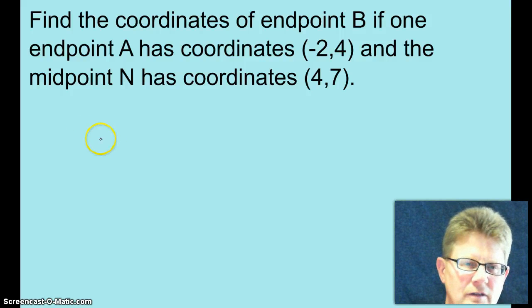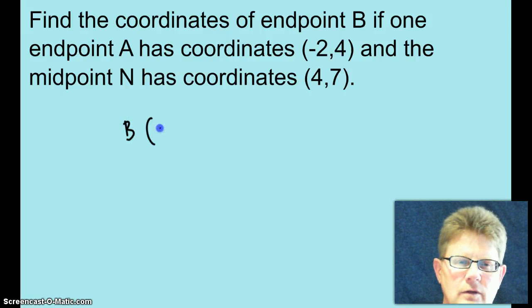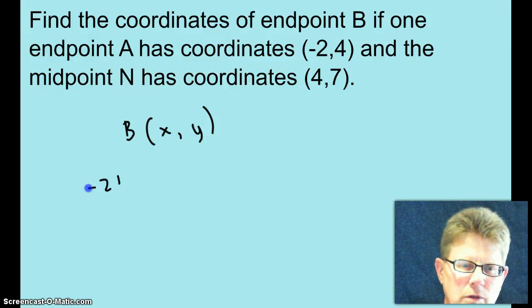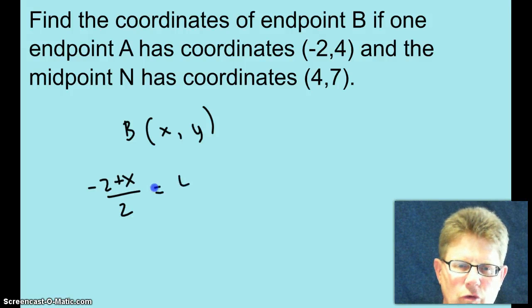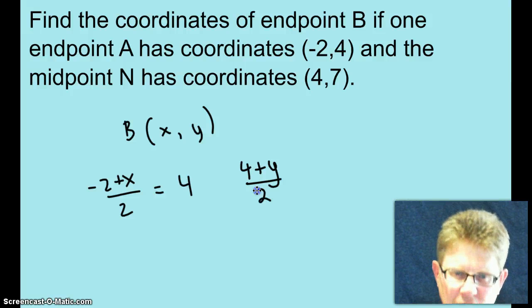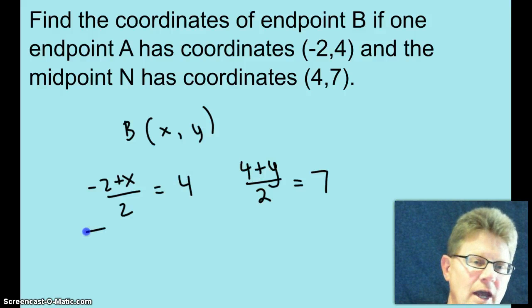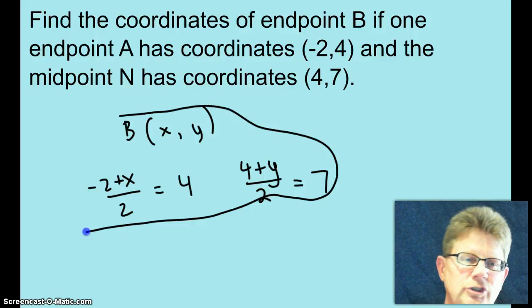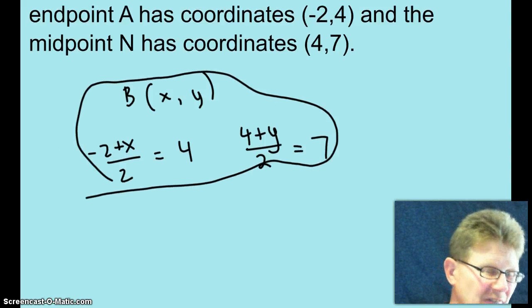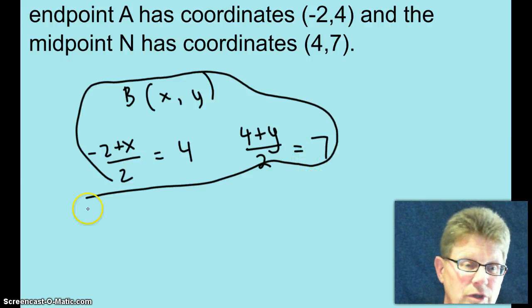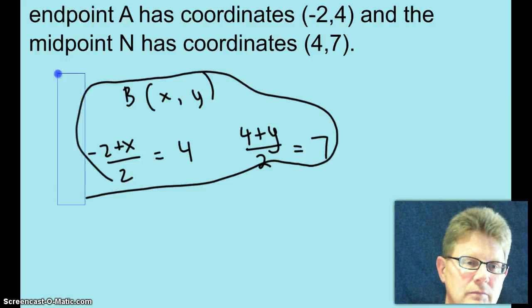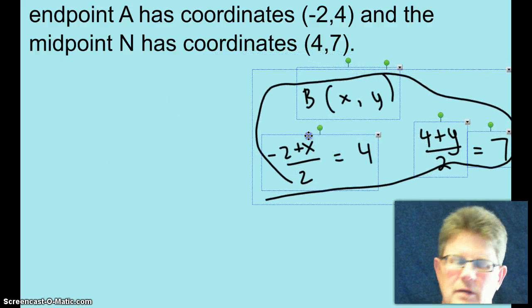All right, now, basically, you're trying to find the coordinates X and Y of the other endpoint. Okay, so, negative 2 plus X divided by 2 equals 4. And 4 plus Y all over 2, because that's the midpoint formula. The two Y coordinates added together divided by 2. That equals the coordinates of the midpoint. All right, now, I will let you go ahead and do all this algebraic mumbo jumbo, but do you think you have an open enough mind for me to show you a different way of doing it? Do you have an open enough mind? I don't know, but we'll try.